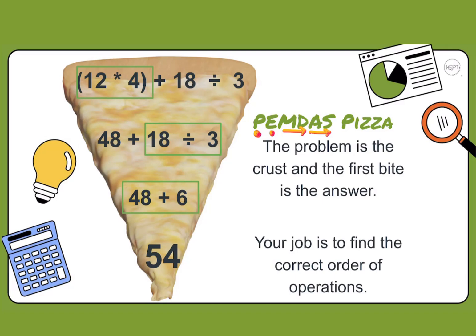Order of operations is as easy as pie — think of pizza pie. The problem is the crust of the pizza. Your job is to go through all the correct order of operations and come down to the first bite of pizza, which is the answer. Let's walk through an example.